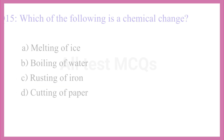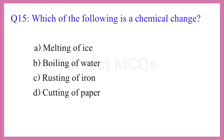Question No. 15. Which of the following is a chemical change? The correct answer is option C. Rusting of iron.